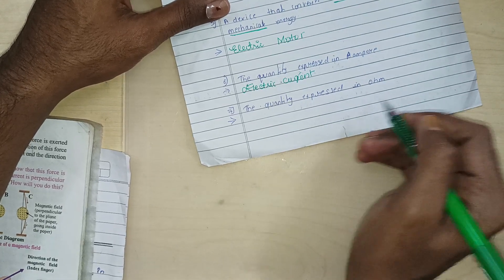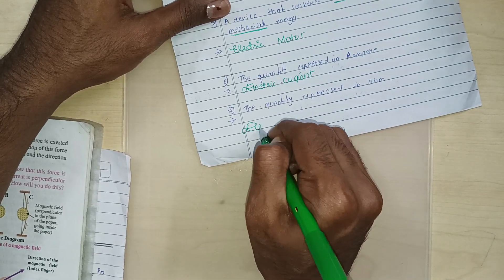Then we have next question. The quantity expressed in ohm is electrical resistance. Electrical resistance.